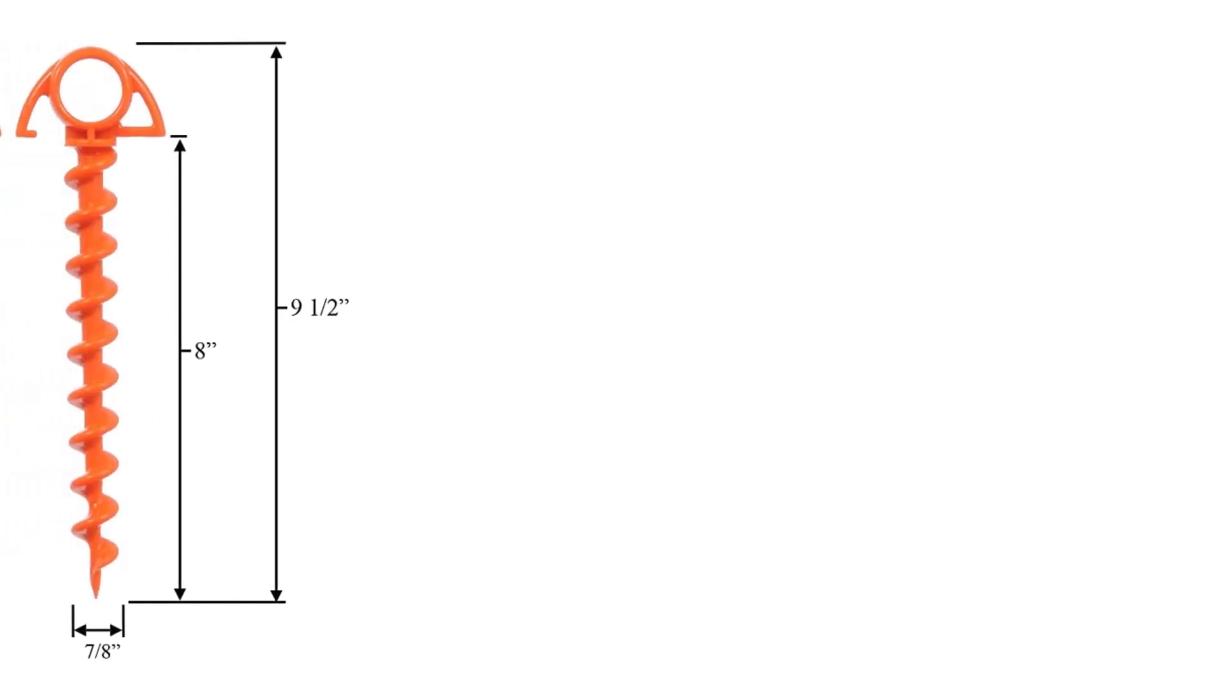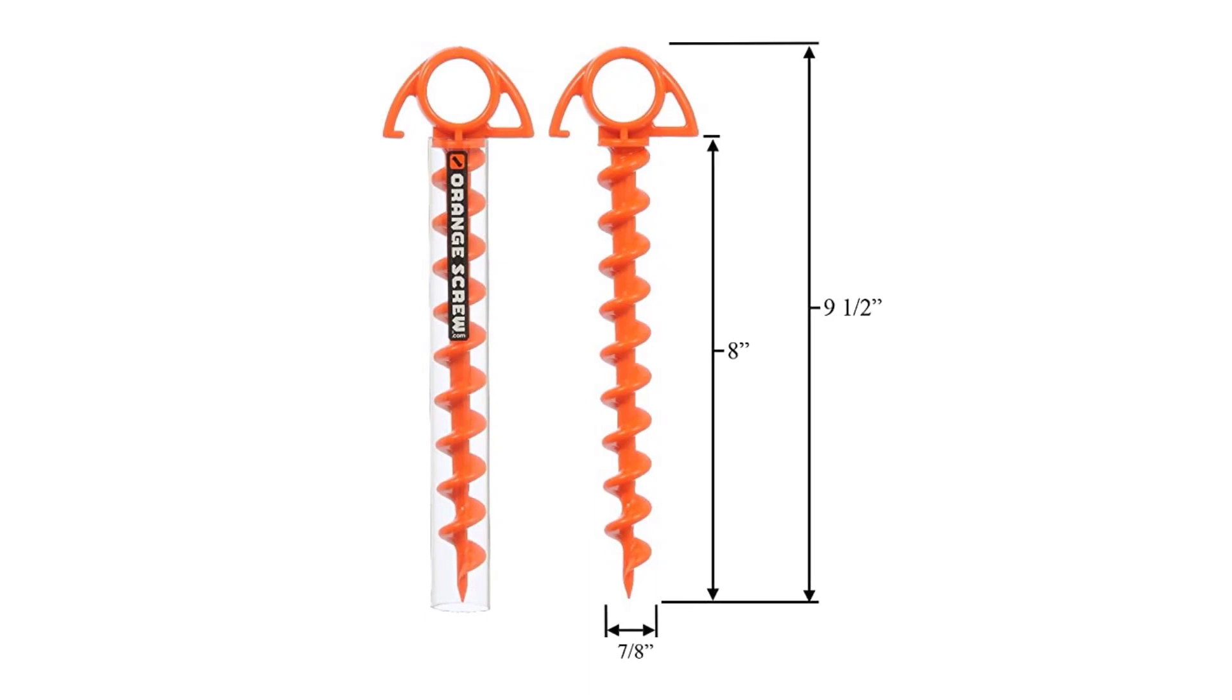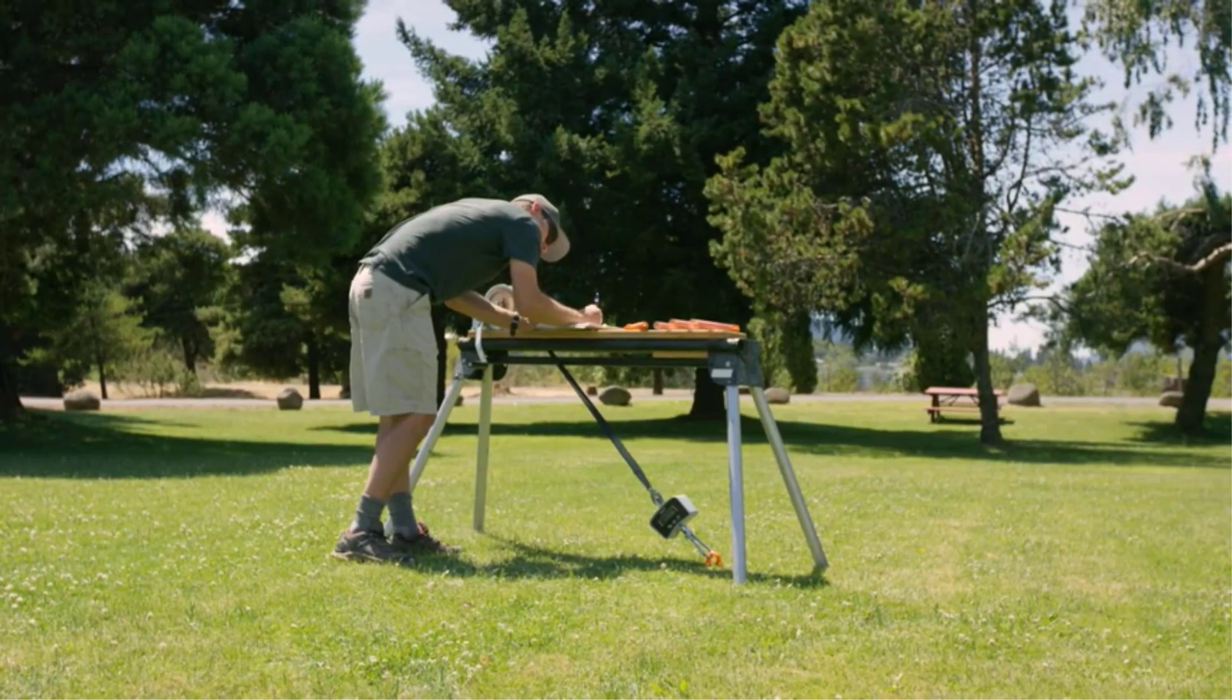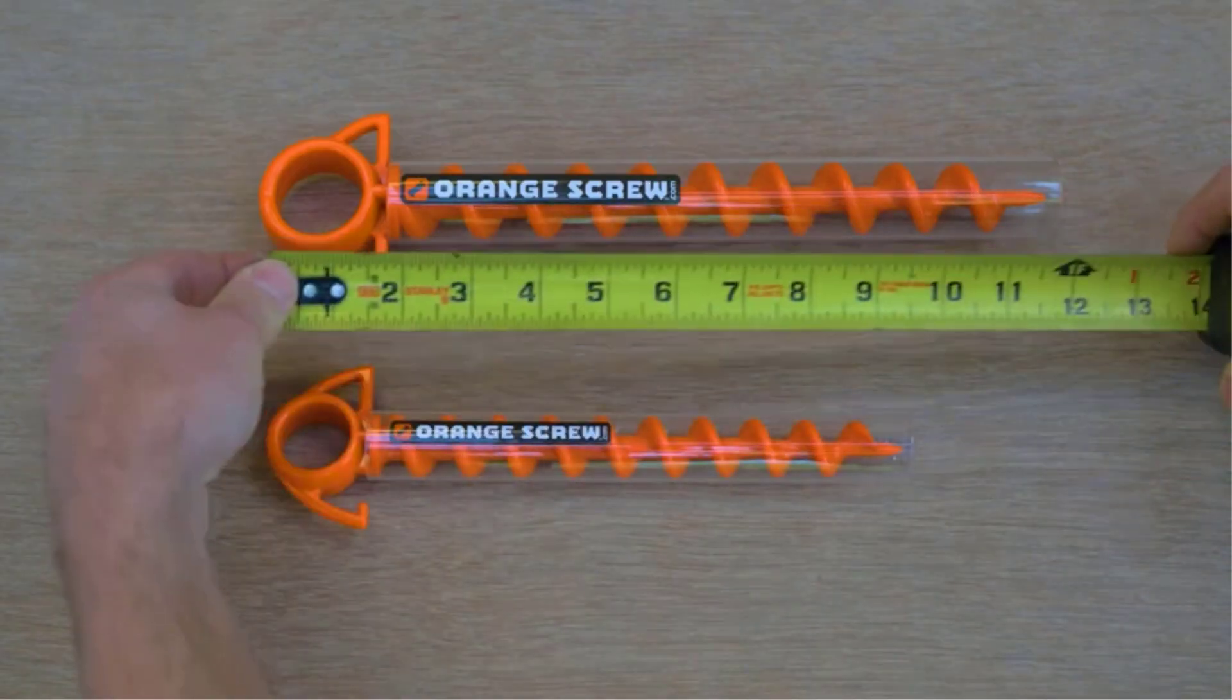The orange screw is made of high-quality materials that are durable and long-lasting. The design is simple yet effective, and the product is lightweight, making it easy to pack and transport. The screw design makes it perfect for use in all types of terrain, including sand, dirt, and rocky surfaces.